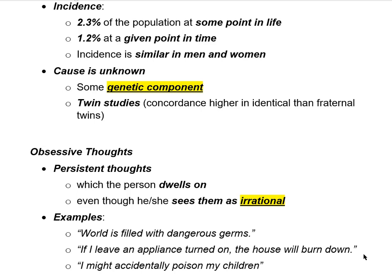They'd feel a lot better if they could go back and check that the hallway light is off. A lot of these irrational beliefs focus on the fear of harming somebody else — what if I accidentally poisoned my children? What if instead of putting sugar on my children's cereal, I accidentally put rat poison on it? These are all obsessive thoughts. We haven't gotten to the compulsive part yet — the behaviors people engage in to defend themselves against these obsessive thoughts.